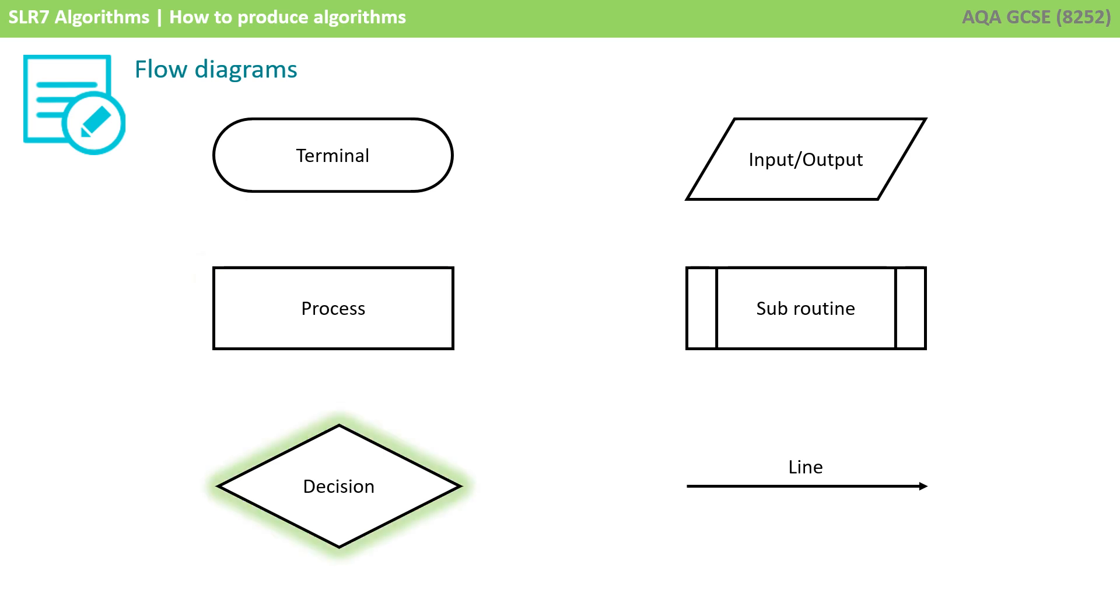You have a decision symbol, and this shape represents the decision. It will have a yes or no, true or false outcomes, which will be represented by two separate lines or paths exiting the shape. Then you've got an input-output shape, and this represents the input and output of data to the algorithm. And you have a shape representing a call to a subroutine. A subroutine will have its own flowchart, but when you call it from the main program, you need to express that call using this symbol.